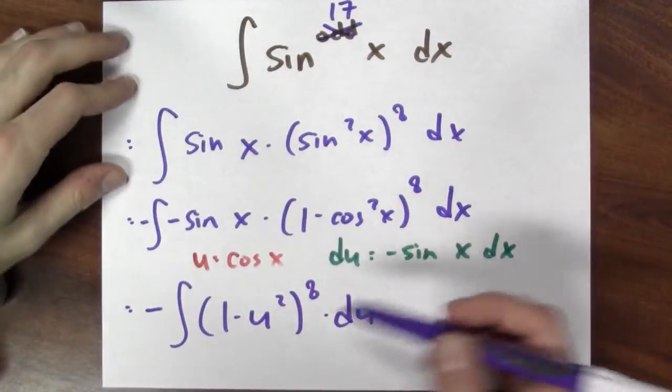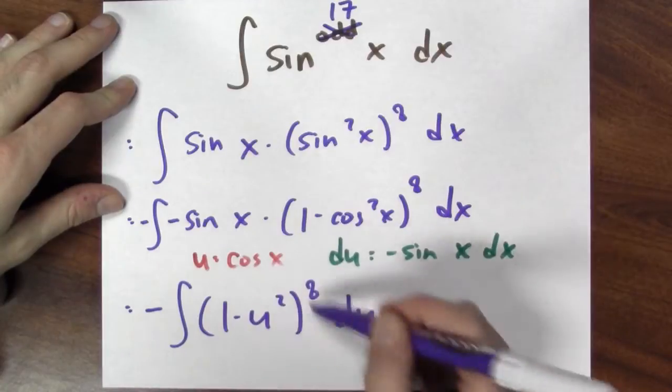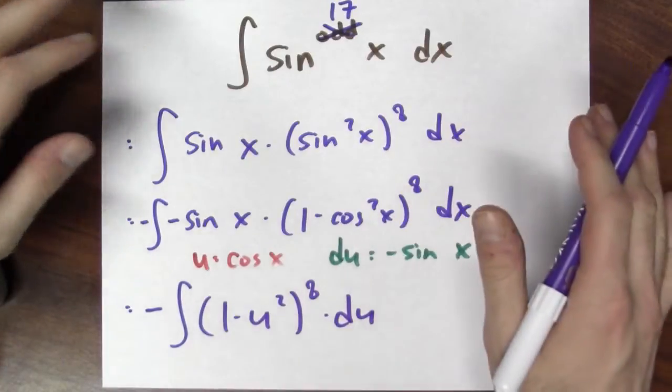I mean, it's a little bit annoying because I guess I want to expand this thing out to find an anti-derivative of this, but I can do it. But what if, instead, I'd had an even power of sine?